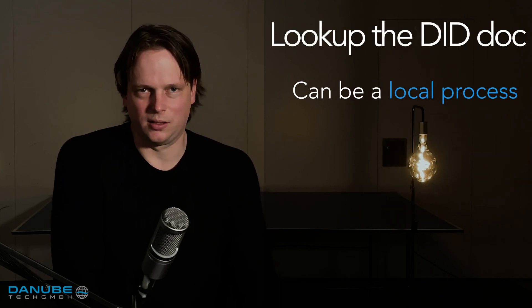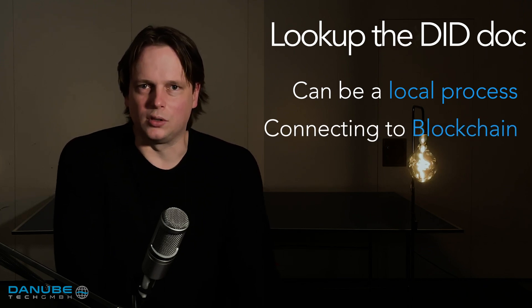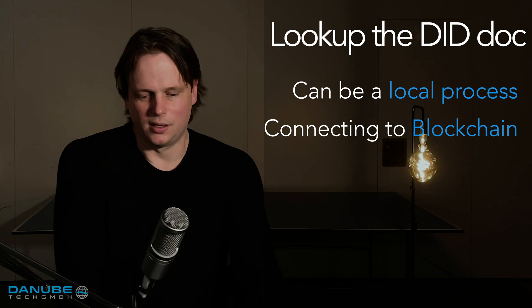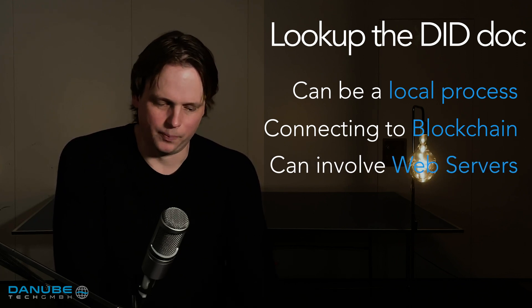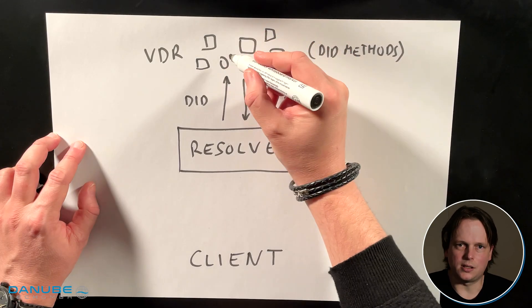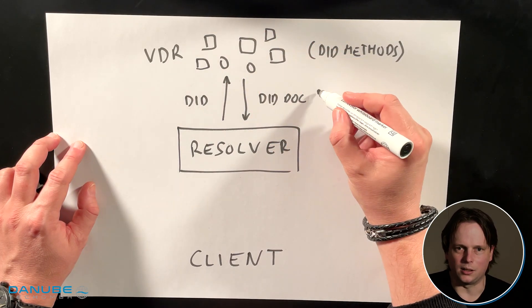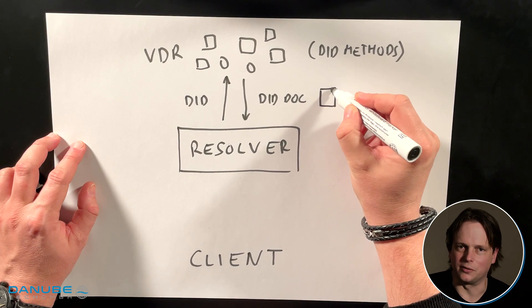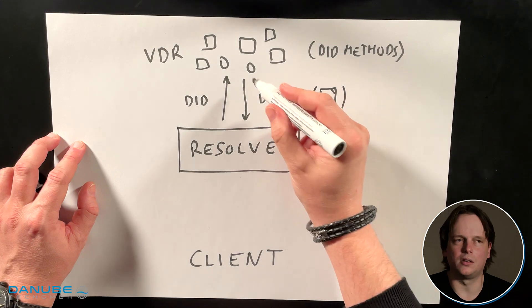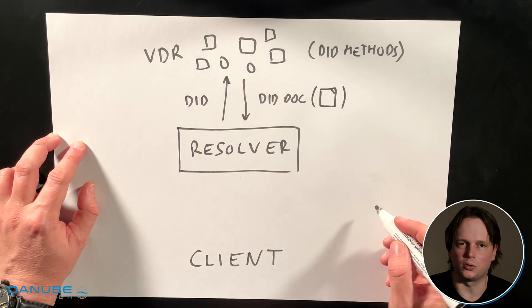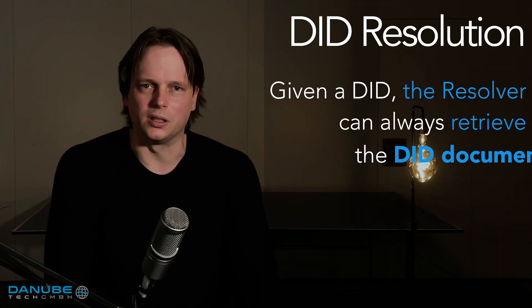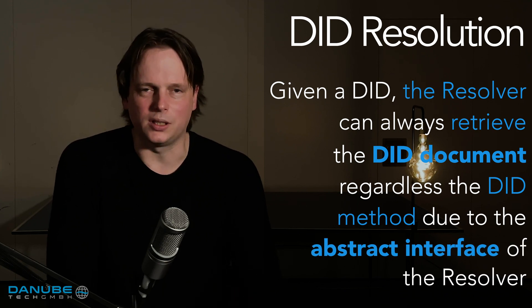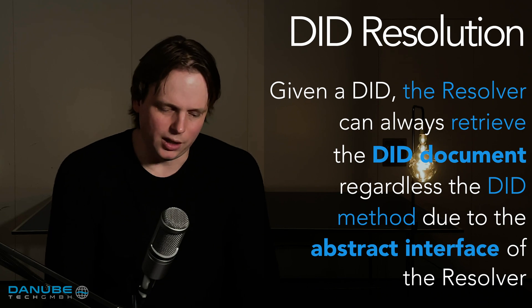This can be done in many different ways. Sometimes this is an entirely local process, and sometimes this involves connecting to a blockchain and retrieving data from the blockchain. Sometimes it involves web servers or all kinds of other underlying infrastructure. It is also interesting to understand that the DID document is sometimes stored in plain text in one of these verifiable data registries, but sometimes it is more of a dynamic virtual data structure. What matters is this abstract interface that says that the resolver, given a DID, can somehow look up the associated DID document.